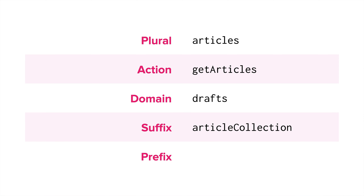Finally we have the 'all' prefix query, such as 'allArticles'. This emphasizes that the query will return a specific type. However, it could potentially cause confusion if a filter argument is passed, leading to not all items being returned.